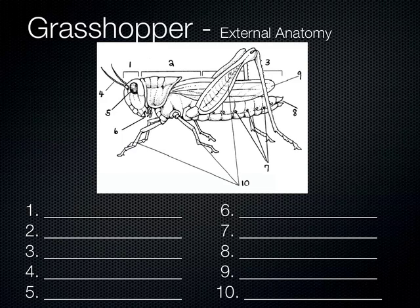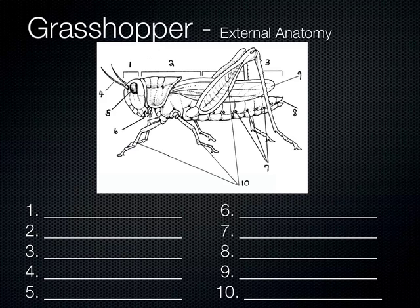In today's lab we will be looking at preserved grasshoppers, and you're going to have to know some of the parts of the grasshoppers. These are sort of general. Grasshoppers are a type of insect, obviously. They're very closely related to things like crickets and locusts. I'm sure you've all seen grasshoppers before, and most of their parts they have in common with lots of other insects as well.